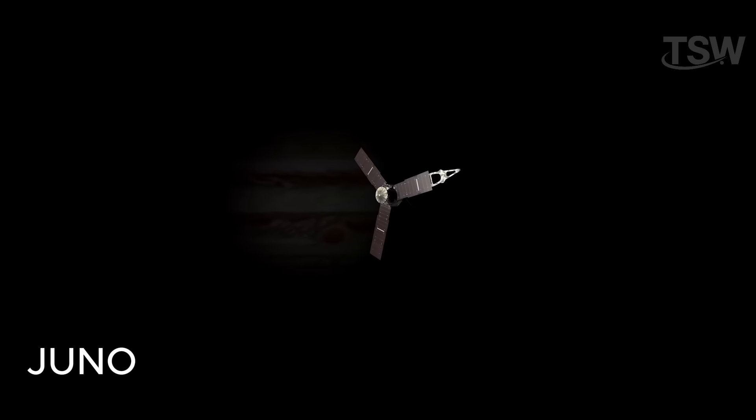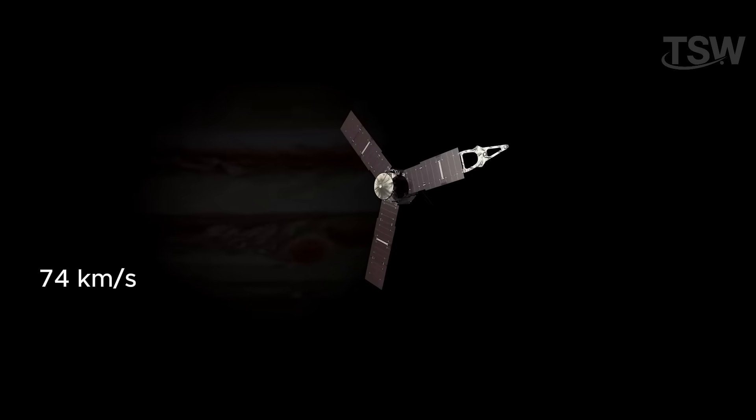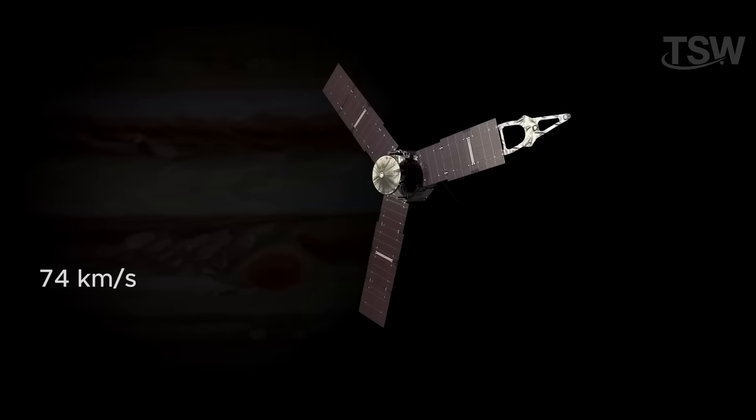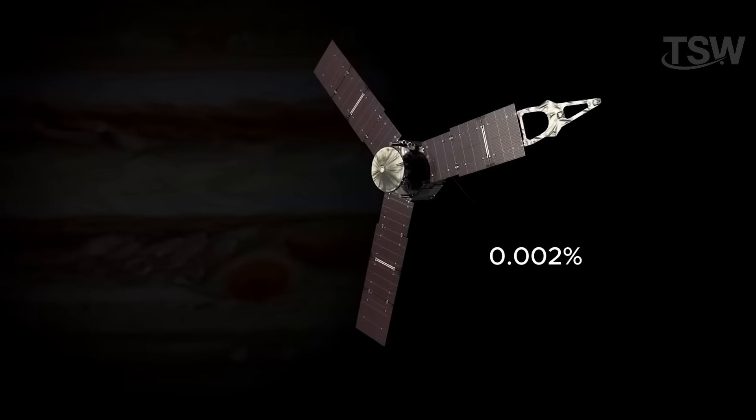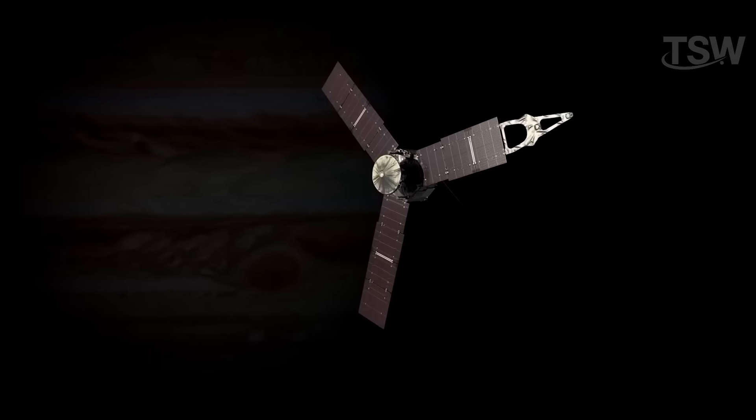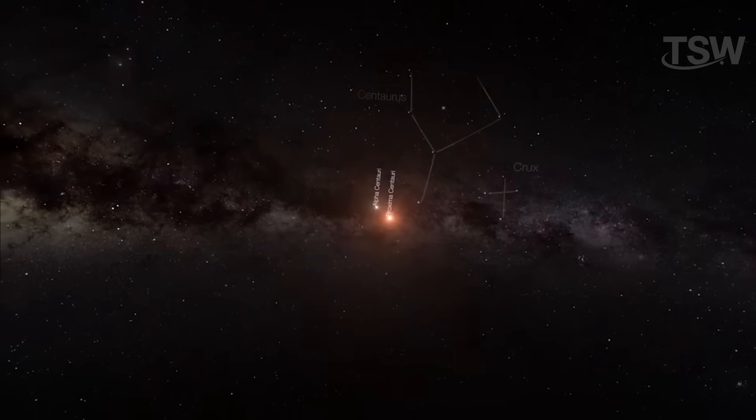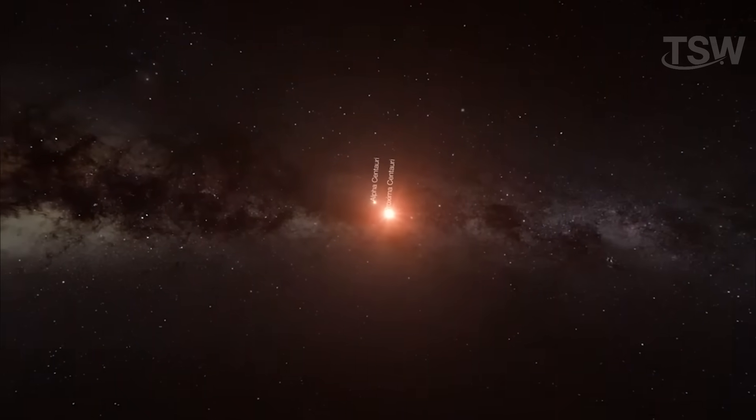Juno, one of the fastest spacecraft ever built, travels at around 74 kilometers per second, equivalent to just 0.002% of the speed of light. Still, that's incredibly fast by our standards. But even at that speed, it would take about 20,000 years to reach our neighboring star, Proxima Centauri.